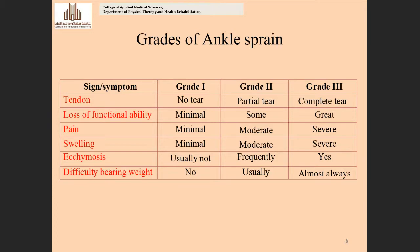According to signs and symptoms, ankle sprain can be classified into three grades: grade one, grade two, and grade three. In grade one, there is no tear — only a slight stretch. In grade two, about 50% of the tendon fibers are involved. In grade three, there is complete rupture of the tendons.